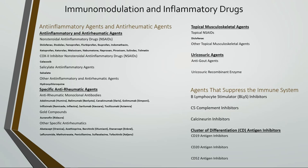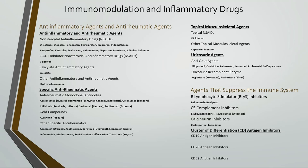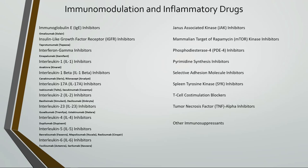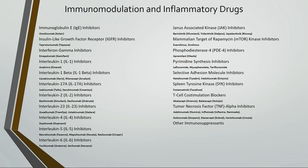Topical musculoskeletal agents include topical NSAIDs and other topical musculoskeletal agents. Uricosuric agents include anti-gout agents and uricosuric recombinant enzymes. Agents that suppress the immune system include B-lymphocyte stimulator inhibitors, C5 complement inhibitors, calcineurin inhibitors, cluster of differentiation antigen inhibitors including CD19, CD20, and CD52, immunoglobulin E inhibitors, interferon gamma inhibitors, interleukin-1, 1-beta, 17A, 2, 23, 4, 5, and 6 inhibitors, Janus-associated kinase inhibitors, mammalian target of rapamycin kinase inhibitors, phosphodiesterase-4 inhibitors, pyrimidine synthesis inhibitors, selective adhesion molecule inhibitors, spleen tyrosine kinase inhibitors, T-cell co-stimulation blockers, tumor necrosis factor alpha inhibitors, and other immunosuppressants.